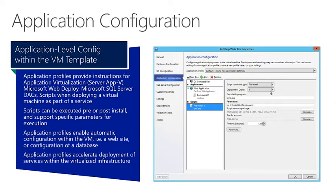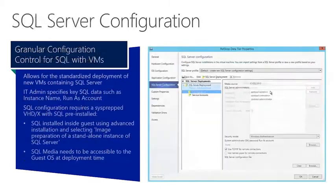Application config is what VMM allows admins to add application-level configurations, such as MS Deploy web packages to accelerate deployment of pre-configured websites and applications; Server App-V packages, which allows admins to create portable virtualized application images for rapid deployment or migration; or SQL DAC packages, which accelerate SQL Server database deployment.